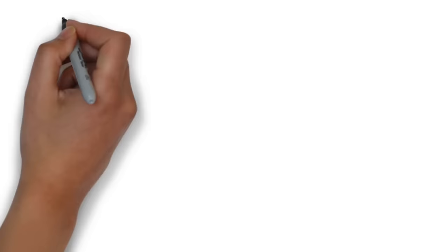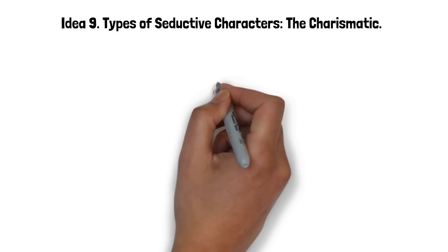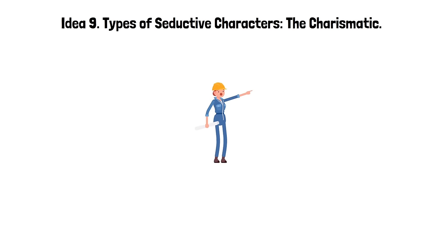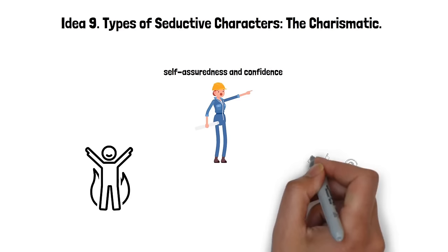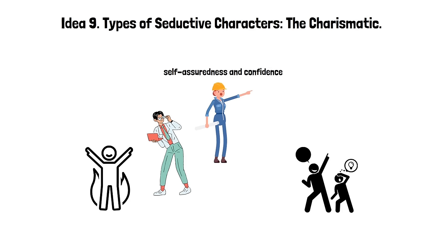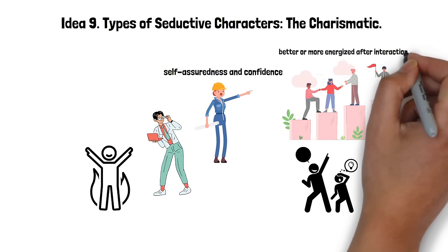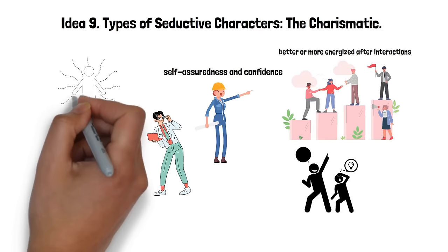Idea 9. Types of seductive characters. The charismatic. The charismatic is a seducer who commands attention through their personal magnetism and strong presence. They often have a sense of self-assuredness and confidence that people find compelling. A charismatic person is not only confident, but also passionate, and this passion often extends to their ideas and visions. They have a natural ability to inspire others and generate excitement. Their presence is felt and remembered. They leave a strong impression on others with their words and actions. The key to their seductive charm is their ability to make those around them feel invigorated and motivated, leaving people feeling better or more energized after interactions. Their allure is tied to their energy, their strength of character, and the belief they inspire in others.